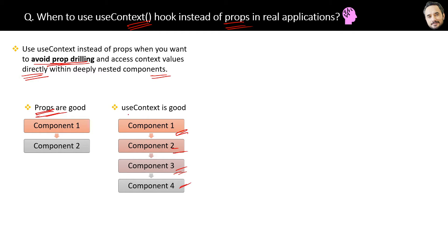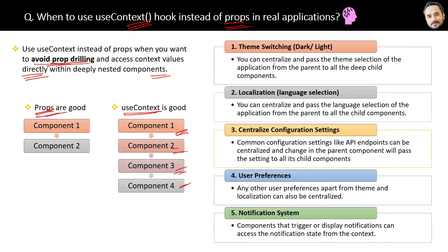Here are five real application scenarios for which useContext is better: theme switching, localization, centralized configuration settings, user preferences, and the notification system. These are all centralized settings you'd find in the settings page of your web application.